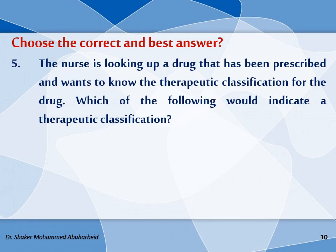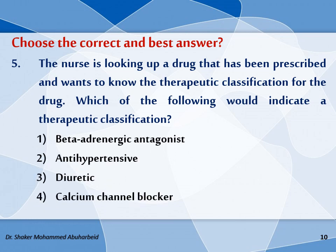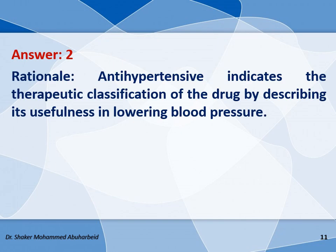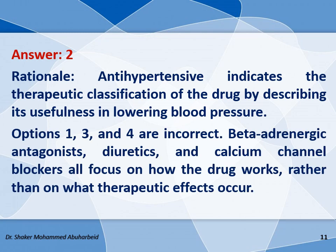The fifth question: the nurse is looking up a drug and wants to know the therapeutic classification. Which of the following indicates the therapeutic classification by describing its usefulness in lowering blood pressure — beta-adrenergic antagonist, antihypertensive, diuretic, or calcium channel blocker? The answer is 2: antihypertensive indicates therapeutic classification by describing its usefulness in lowering blood pressure. Beta-adrenergic antagonist, diuretics, and calcium channel blockers describe how the drug works, so they belong to pharmacologic classification.